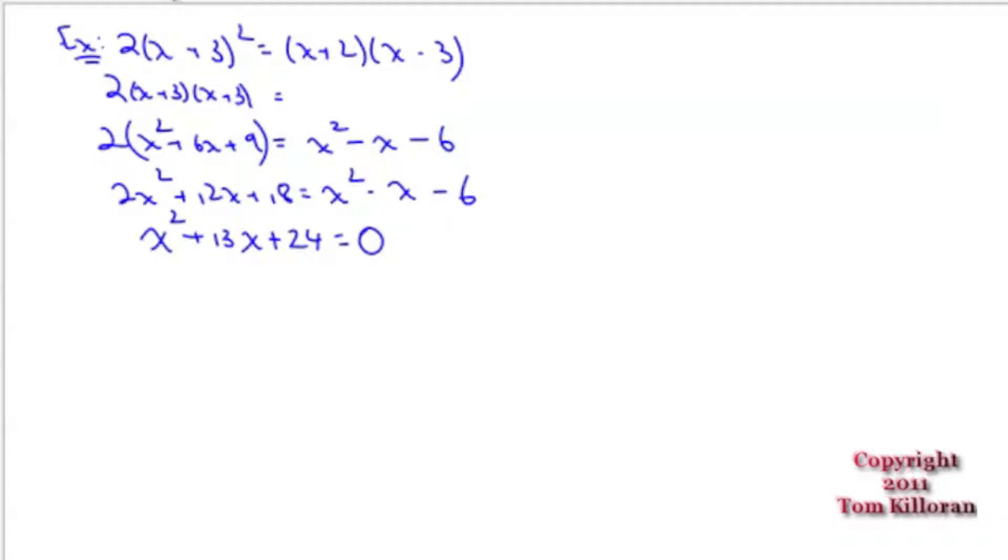I'm hoping that there are no factors of 24 that add to 13. 2 and 12, 8 and 3, 6 and 4. None of them touch 13. That's good. It doesn't matter. We can still use the quadratic formula to solve it. You've got to be really careful. The quadratic formula only works if your polynomial is in order and it is equal to 0. It has to be equal to 0. You have to get it in standard form.